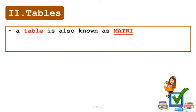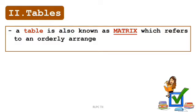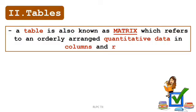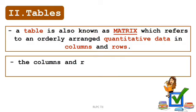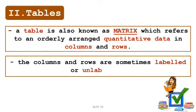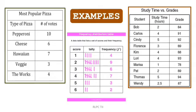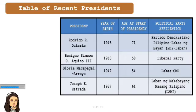Let's proceed now with tables. A table is also known as matrix, which refers to an orderly arranged quantitative data in columns and rows. The columns and rows are sometimes labeled or unlabeled. Observe the given data in the table. It is about the recent presidents of the Philippines and prepare to answer the questions.